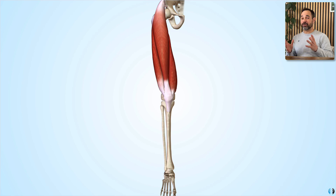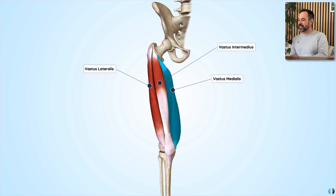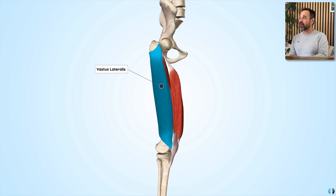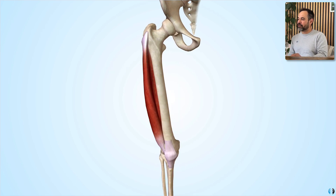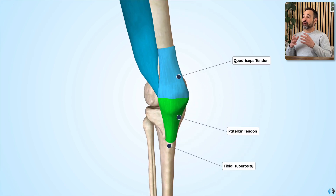So now let's look at these muscles in more detail. The quadriceps are made up of four key muscles: vastus lateralis, vastus intermedius, vastus medialis, and the biggest over the top, rectus femoris. Let's start with vastus lateralis, which we can clearly see on the more lateral side of the anterior thigh. The origin of this muscle comes from the superior half of the anterior and lateral surfaces of the femur before it goes on to insert into the quadriceps tendon and thus the tibial tuberosity.